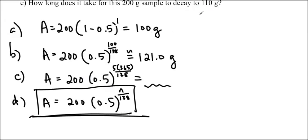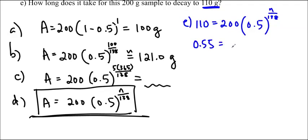So, using this formula, I can try to solve E. E says, how long does it take for this 200 gram sample to decay to 110 grams? And so, I'm going to fill that in, E. So, 110 is the final amount, so I'll fill it in for A. 110 equals 200, times 0.5 to the n over 138. And so, we can start to isolate it. You can move this over. So, we divide. 110 divided by 200 gives us 0.55 equals 0.5 to the n over 138.